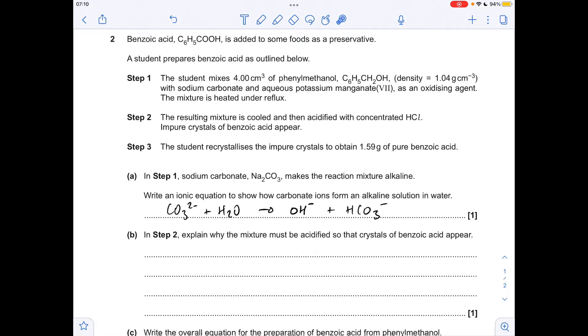Part B is a bit tricky, so we've got to think about what's going on in the reaction. The phenyl methanol has been oxidized under reflux, so it will generate benzoic acid. But these hydroxide ions are going to take the H+ ion from the benzoic acid and generate benzoate ions. So the reason the reaction mixture needs to be acidified is to protonate this benzoate ion and generate the benzoic acid.